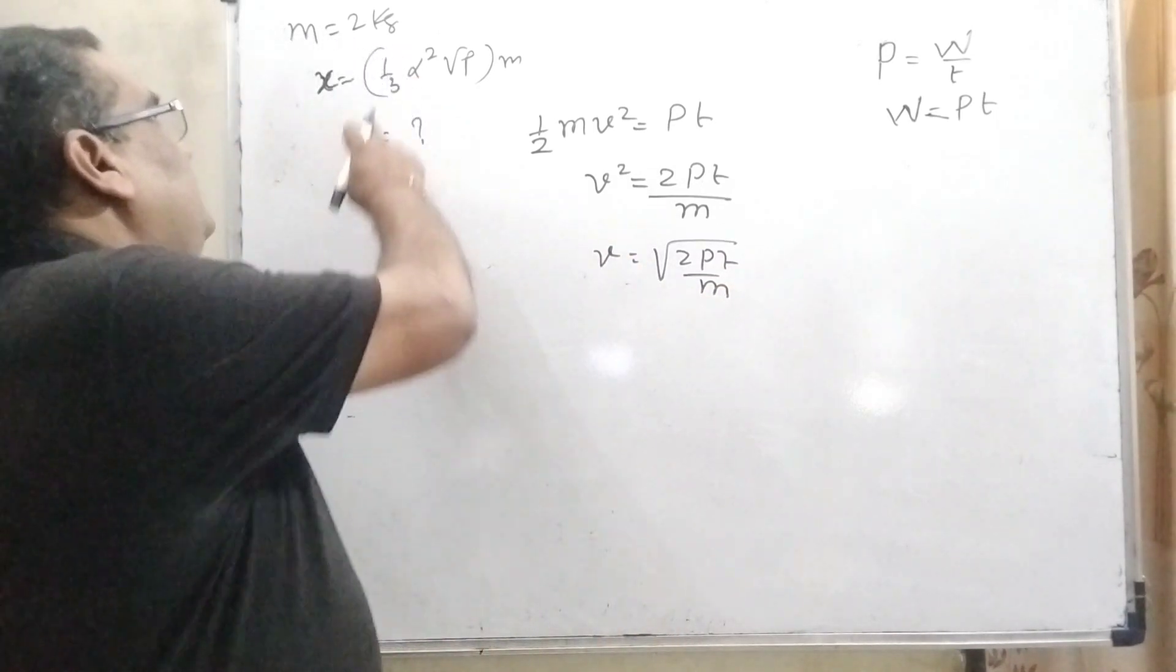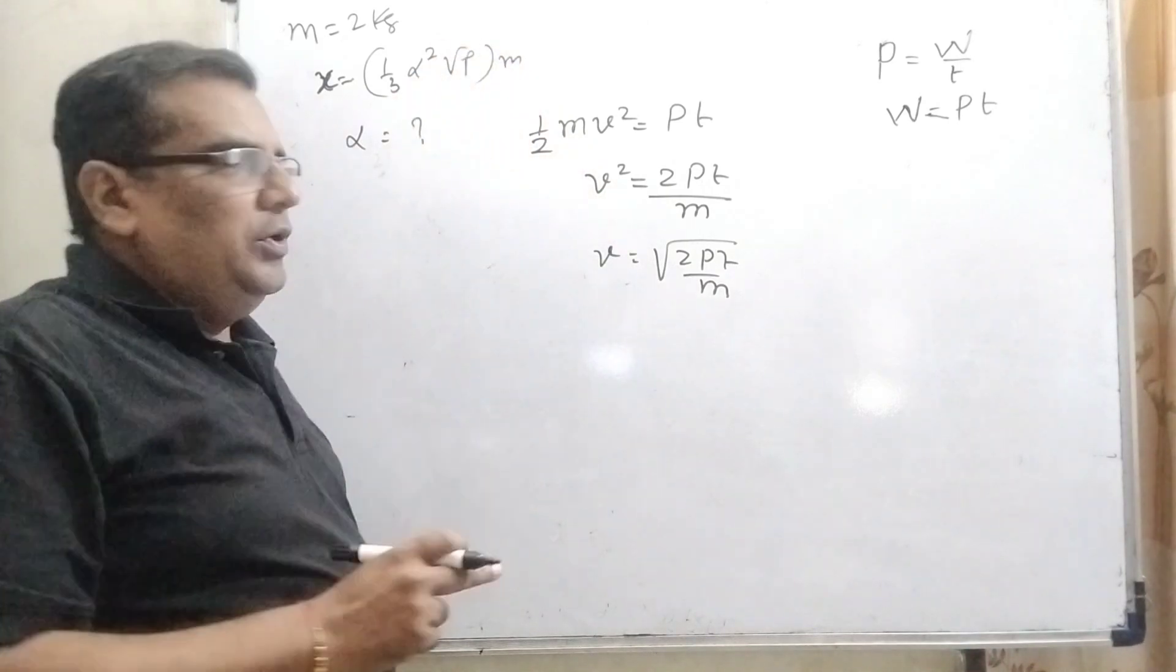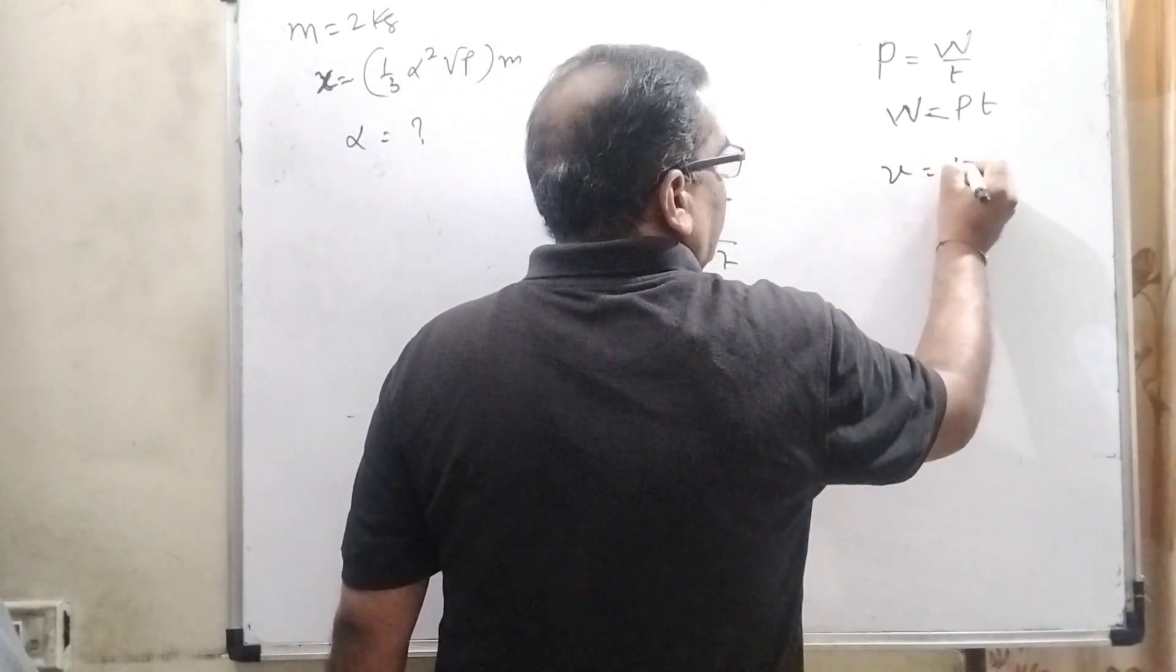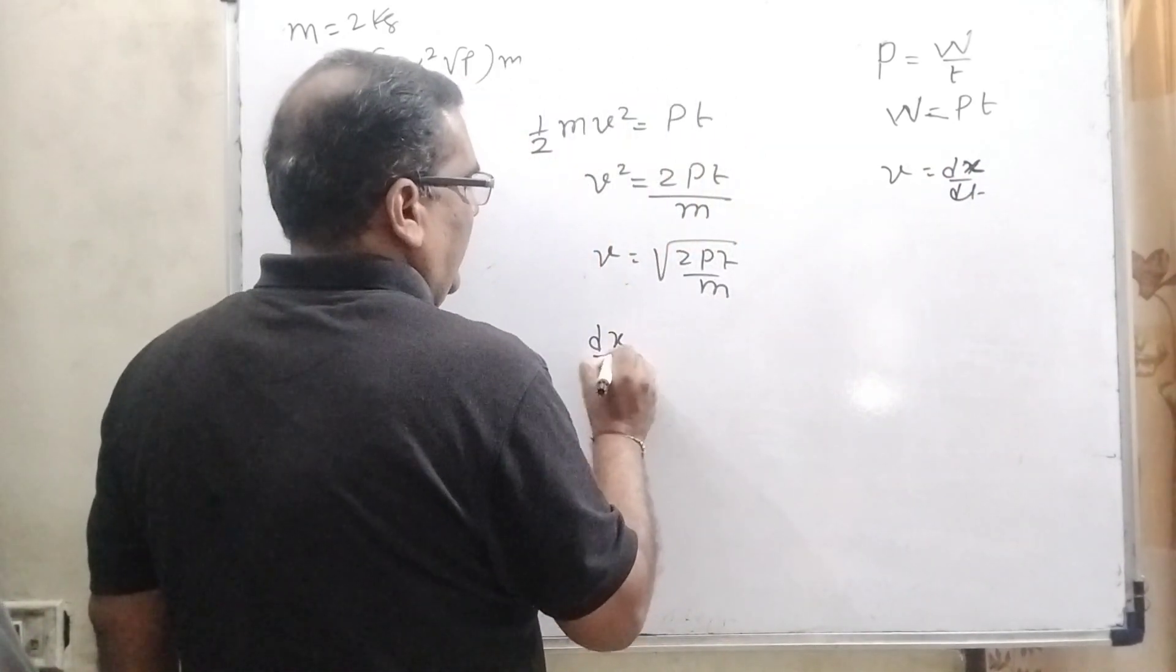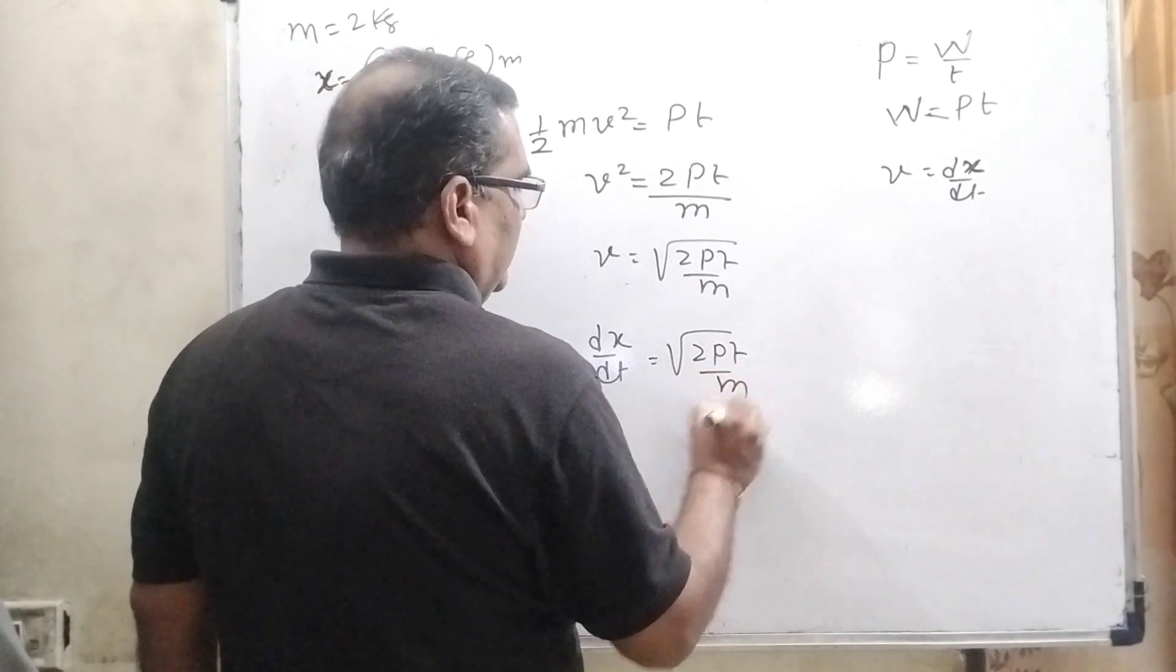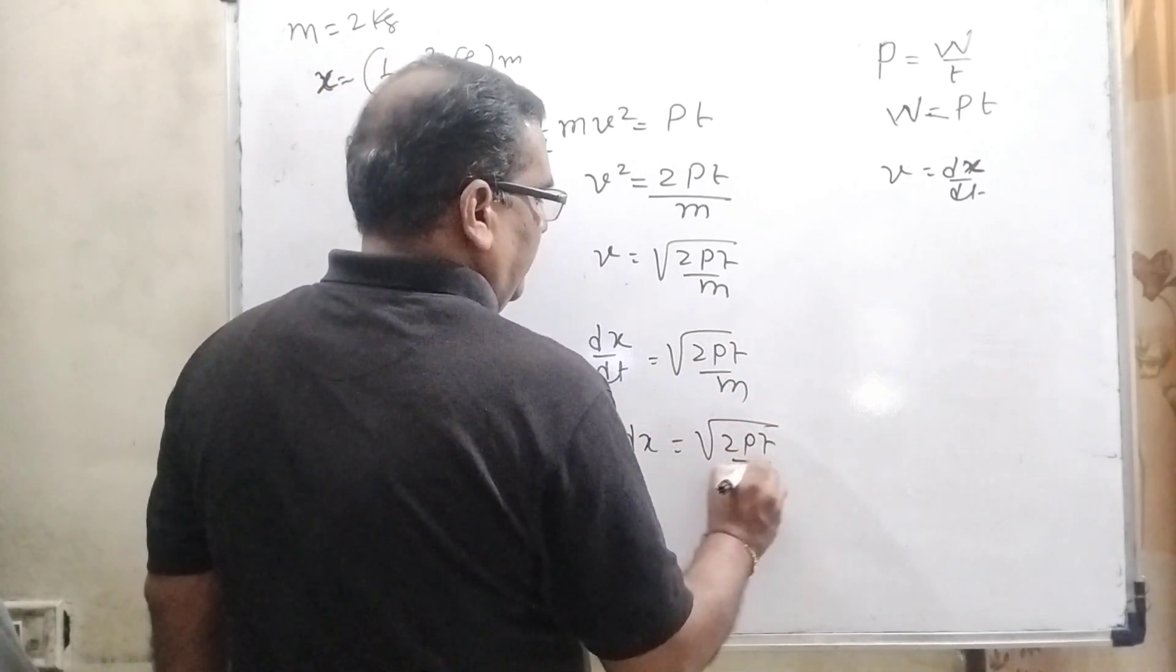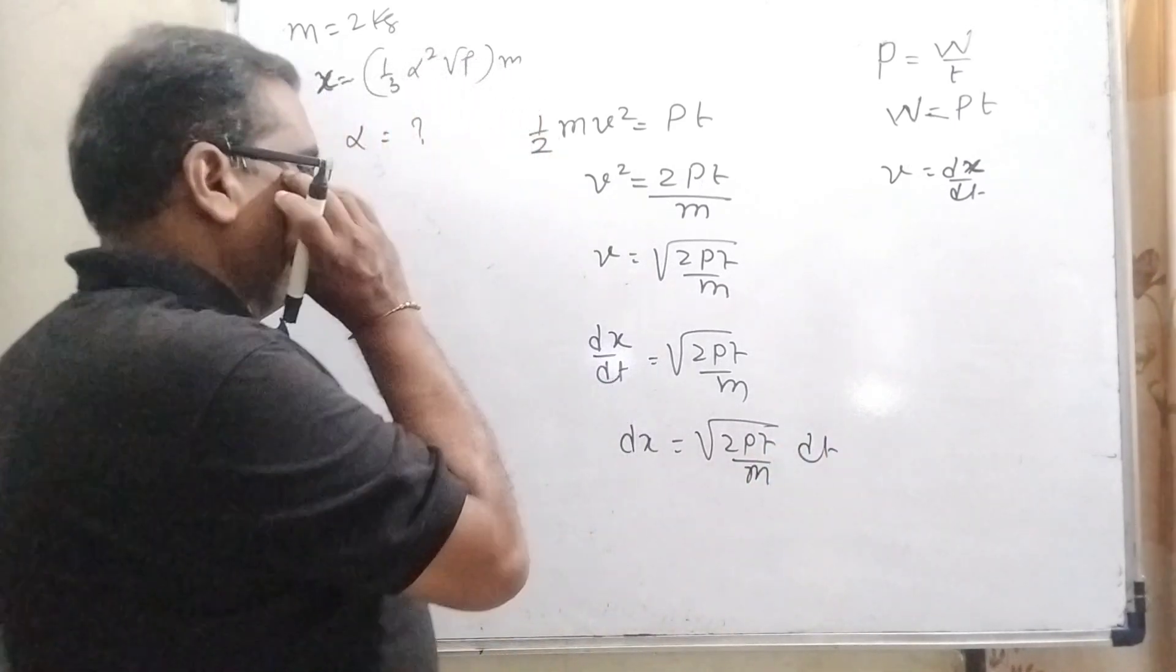We have given that x equals (1/3)α√P in meters. We know that velocity can be written in the form of displacement dx/dt. So substitute this value: dx/dt equals √(2PT/M). Then dx equals √(2PT/M) dt.